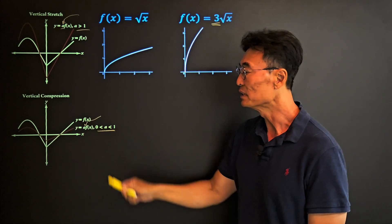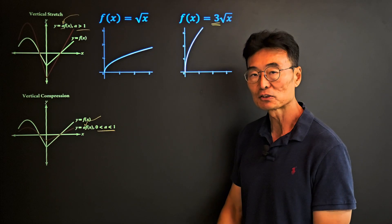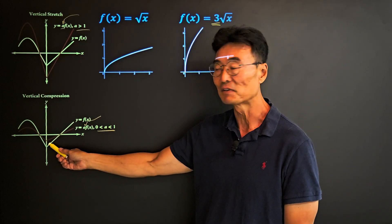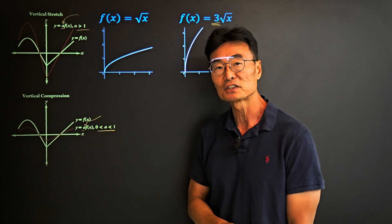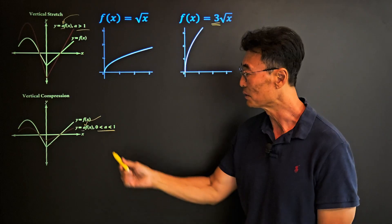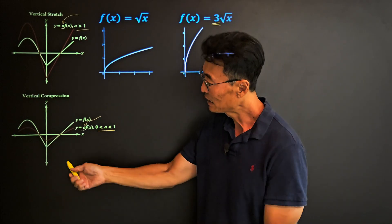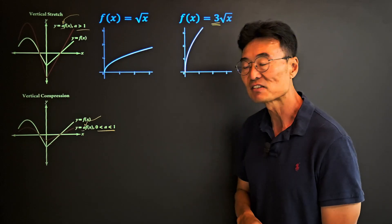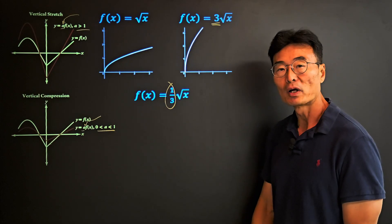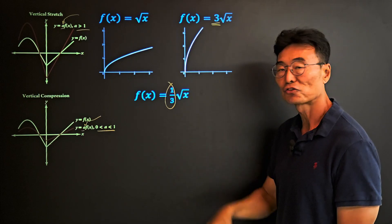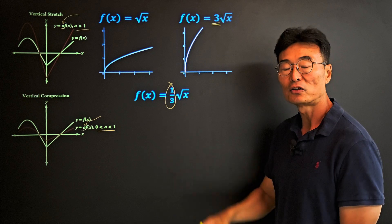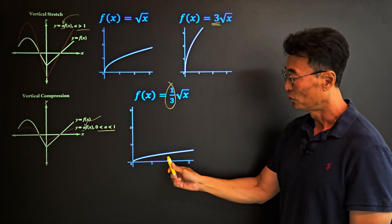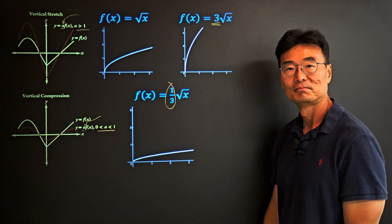For vertical compression, we again have a constant in front of the function, but that constant is a fraction between 0 and 1 — that's why the graph gets squished. If a is between 0 and 1, the graph is compressed by a factor of a. For example, (1/3)√x — because 1/3 is less than 1 — gets vertically compressed.